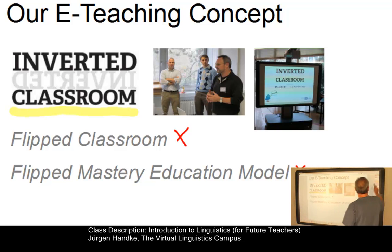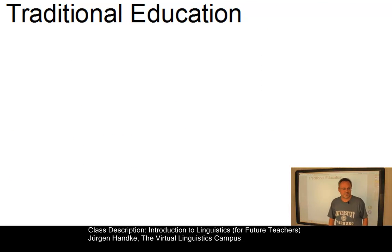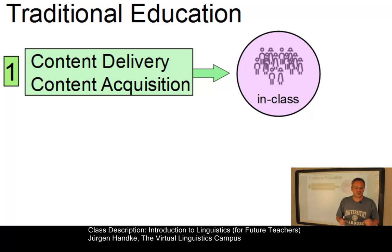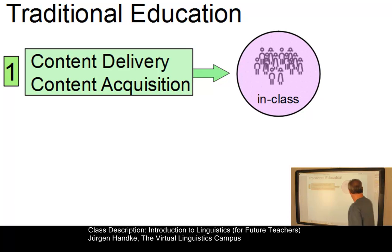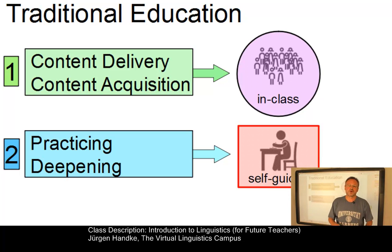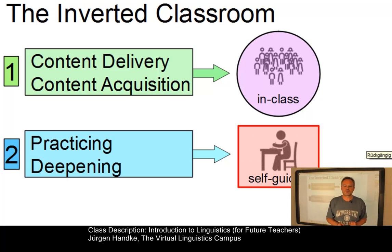But how does this model work? Let's first of all look at traditional teaching. In traditional teaching, content delivery and content acquisition are realized in class, where several dozens of students have to gather at the same time to be entertained — or maybe not — by their teacher. In a second phase, students practice on their own, on the basis of additional exercise material, homework tasks and so on. The inverted classroom flips or inverts these two activities.